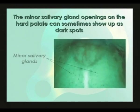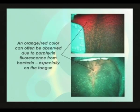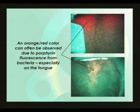The minor salivary gland openings on the hard palate can sometimes appear as dark spots when using Velscope. Here we see two examples of the orange-red color from porphyrin fluorescence generated by bacteria. The tongue is the area in the mouth where this is most commonly observed, as it is quite common for bacteria to get trapped amongst the carpet of filiform papilla or in the fissures that can sometimes develop, as can be seen in the lower photograph.